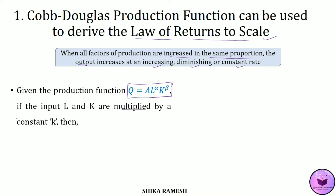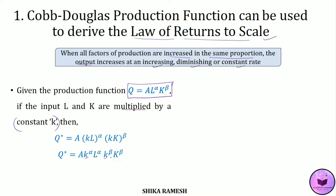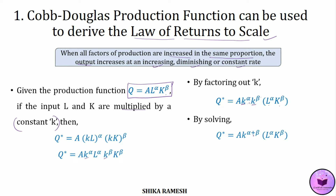If we multiply this equation with a constant K, then we get Q* = A(KL)^α (KK)^β. Opening the brackets and factoring out K, we get Q* = AK^α · K^β · L^α · K^β. Here K^α and K^β are in multiplicative form, so adding their exponents, we get Q* = K^(α+β) · AL^α K^β.